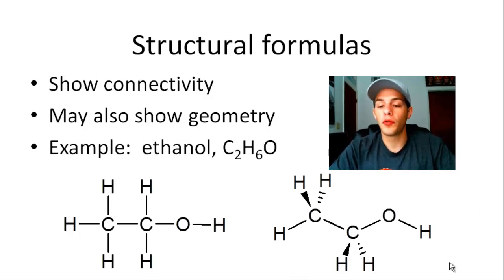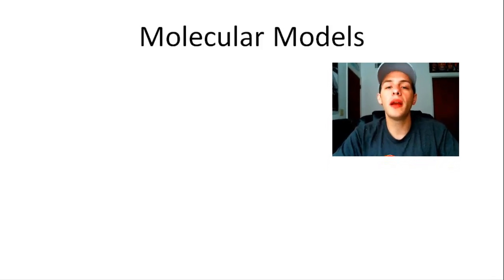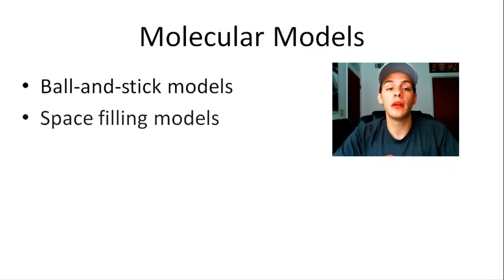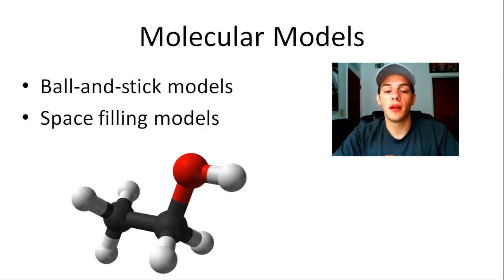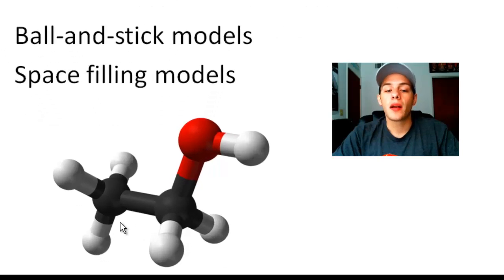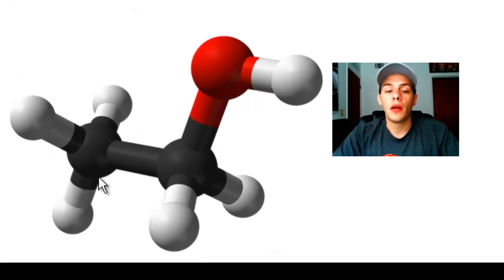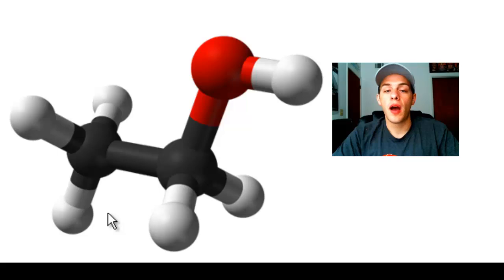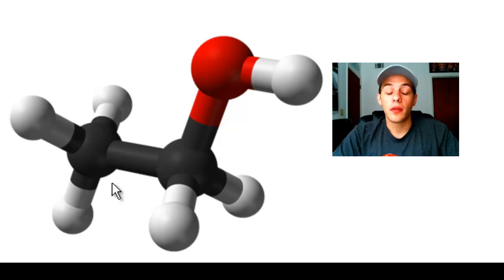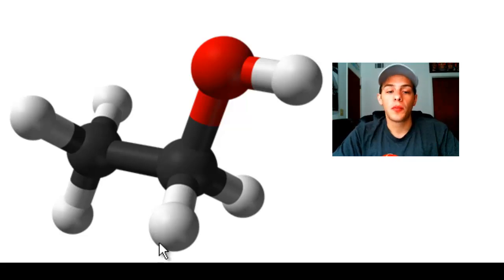Now I'd like to move on to molecular models. There are two main types: ball and stick models and space filling models. In a ball and stick model for ethanol, atoms are shown as spheres and chemical bonds are shown as sticks. Ball and stick models are useful because they show how many atoms of each element there are, the connectivity, the geometry, and the relative sizes of the atoms.